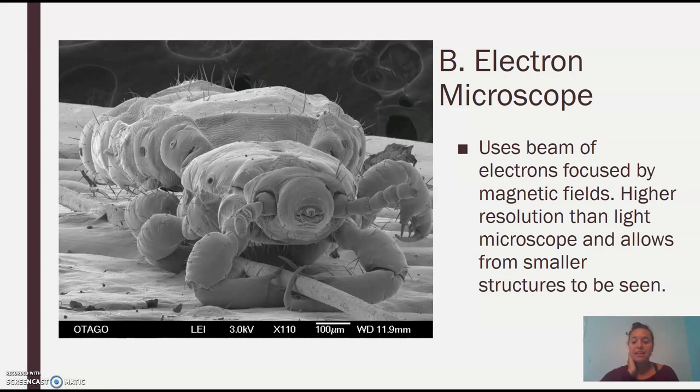These we will never use because they're very expensive. But we'll look at pictures. So this is like a mite, M-I-T-E. They're found in dust. But this is going to give you beautiful pictures. Electron microscope uses electrons focused by magnetic fields. The higher the resolution, it's higher than light microscope. It allows for smaller structures to be seen. So now we're going to see small, tiny things in really pretty pictures.